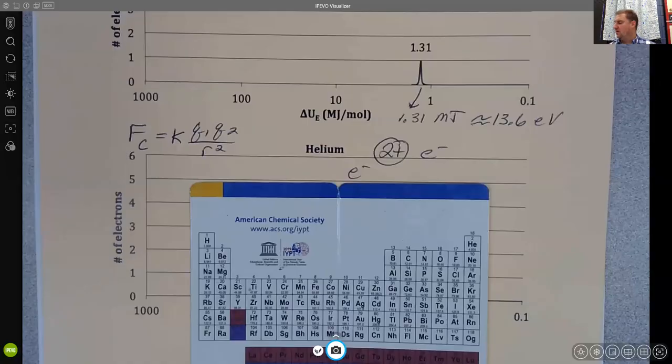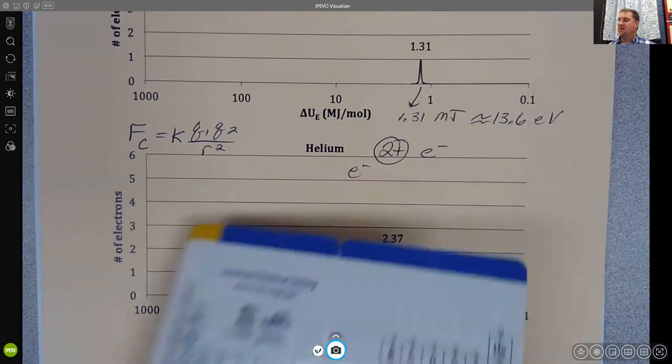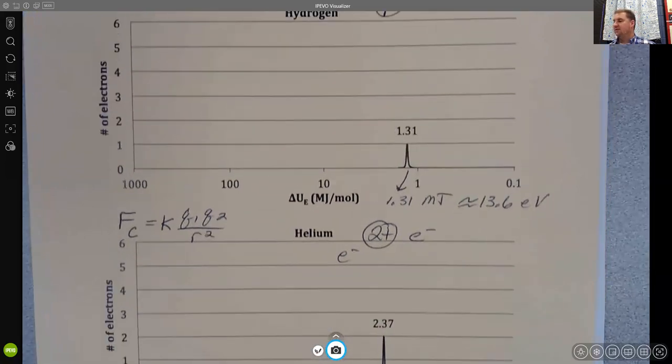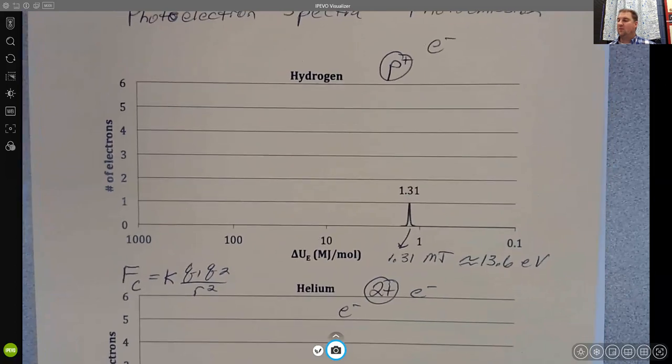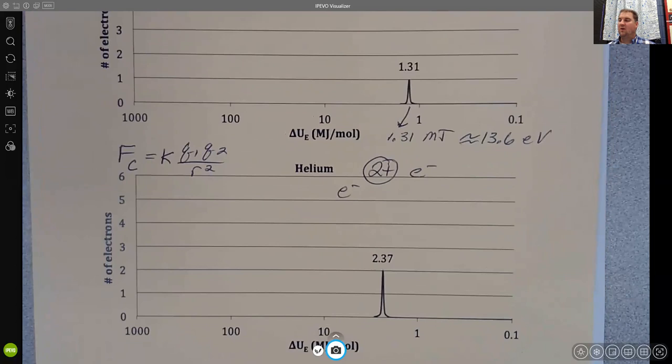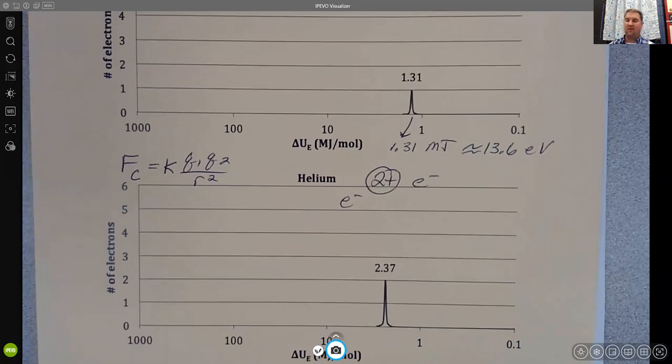Here we are on the periodic table. We've seen hydrogen, we've seen helium. And if we want to look at the third element, lithium, notice that comes down to a new row on the periodic table. Something's going to change here for lithium. What do you think the spectra is going to look like? For hydrogen, we had a peak size of one. For helium, we had a peak size of two. What do you think is going to be true about the peak for lithium?